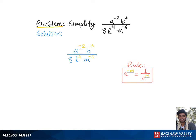Here in our problem, we have a to the negative 2 in the numerator and m to the negative 6 in the denominator as negative exponents. So to simplify our problem, we'll just make them positive by flipping their sides, which gives us m to the positive 6th times b cubed